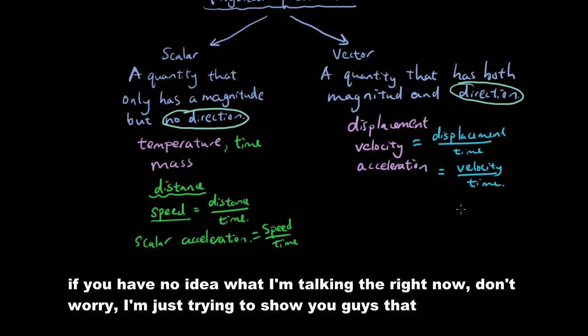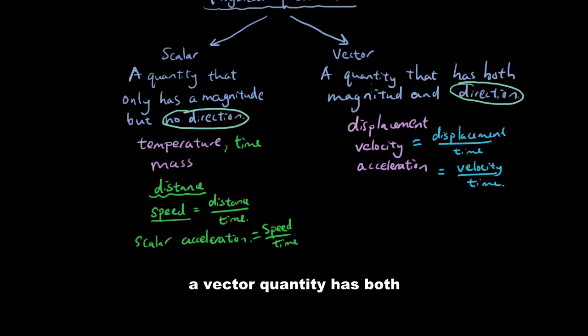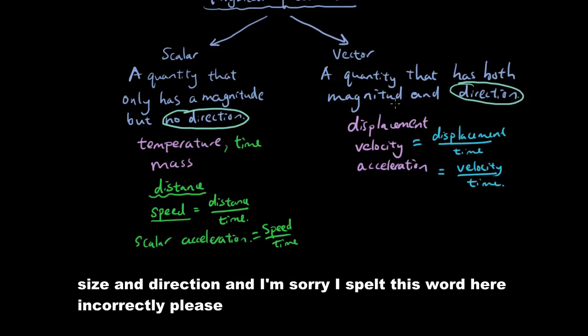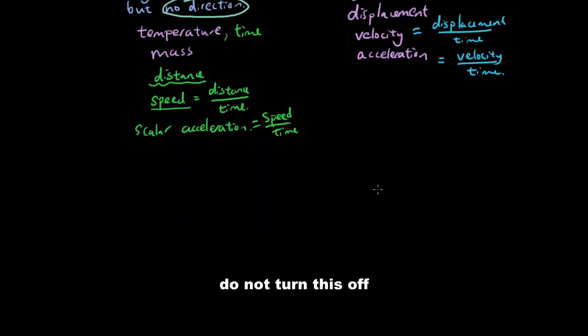If you have no idea what I'm talking about right now, don't worry. I'm just trying to show you guys that a vector quantity has both size and direction. And I'm sorry I spelt this word here incorrectly. Please do not turn this off.